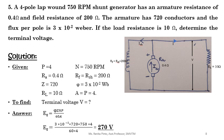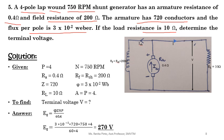Next, the fifth question. A 4-pole lap wound machine at 750 RPM (so A = P), armature resistance RA = 0.4 ohm, field resistance RF = 200 ohm, Z = 720 conductors, flux per pole Phi = 3×10⁻² Weber, load resistance RL = 10 ohm. Find terminal voltage V. First calculate EG using EG = ΦZnP / 60A. Substituting all data, EG = 270 volts.